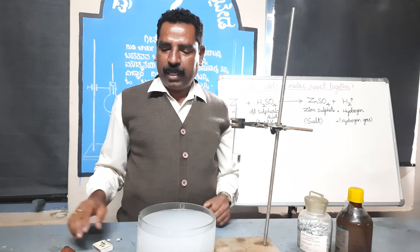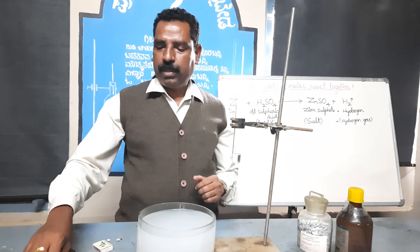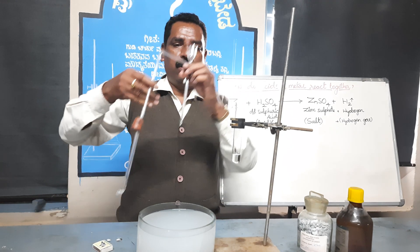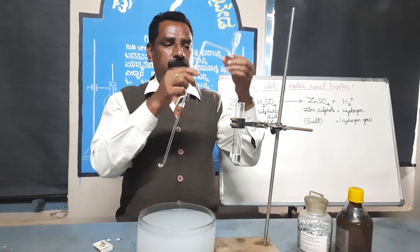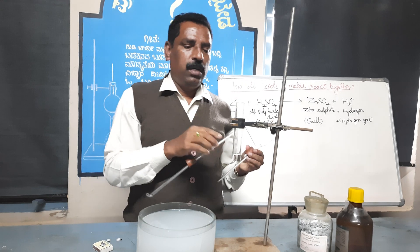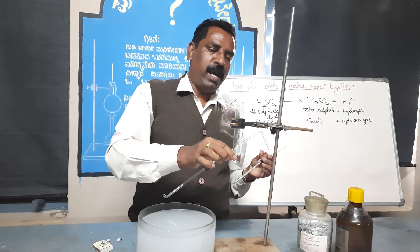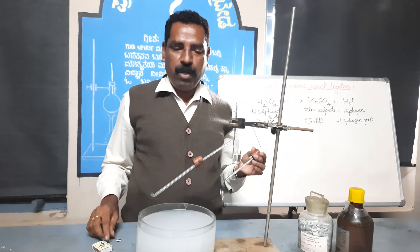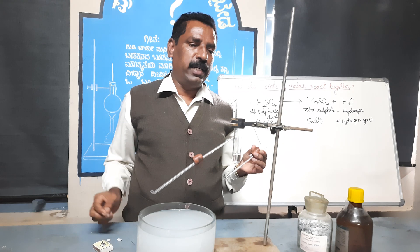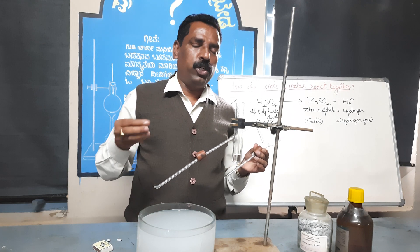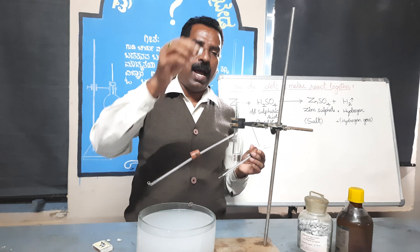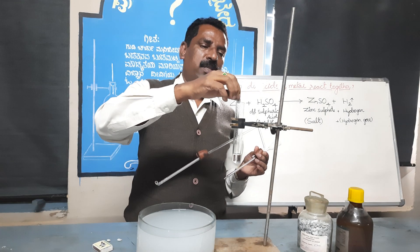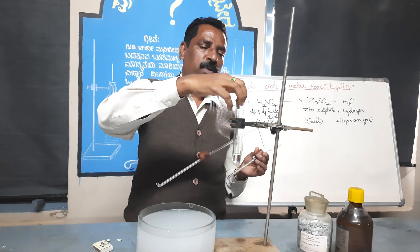Set the apparatus as shown. Take 5 ml of dilute sulfuric acid in a test tube and add a piece of zinc granule.